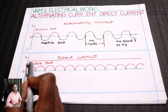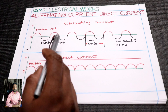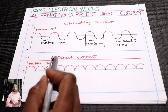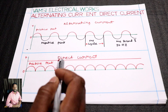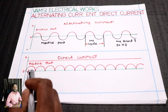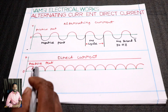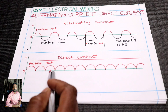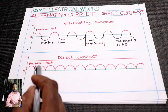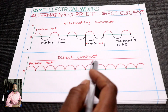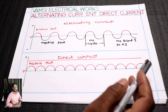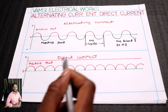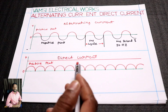In DC, there is only a positive peak — there is no negative peak, only a positive peak. This is the DC supply. There is alternating current and there is direct current.